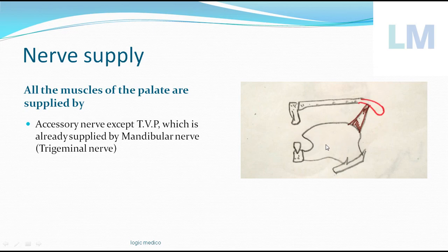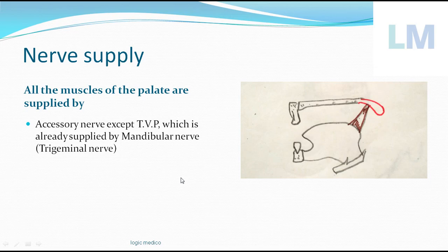The tongue muscles are supplied by the 12th cranial nerve, the hypoglossal nerve. A simple way to remember: when you open your mouth, the soft palate is in the roof — write 11 there. The tongue is in the floor — write 12 there. So the 11th cranial nerve supplies muscles of the soft palate, and the 12th cranial nerve supplies muscles of the tongue, with some exceptions to remember.